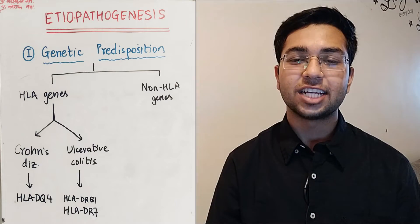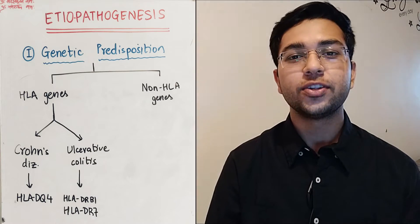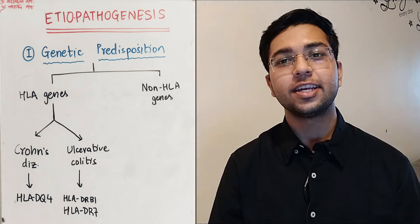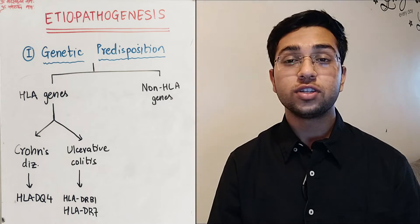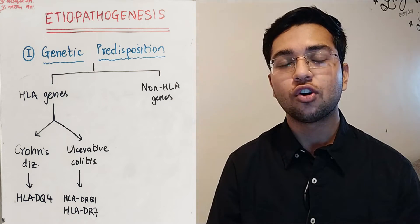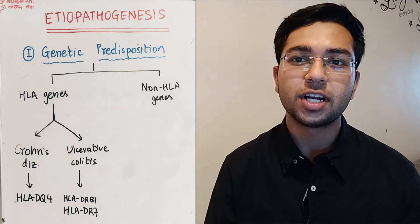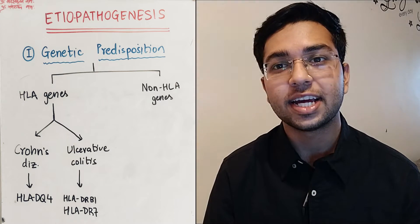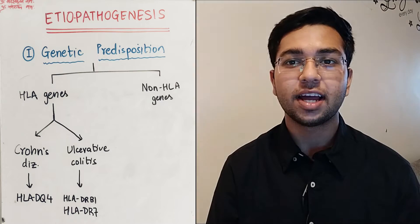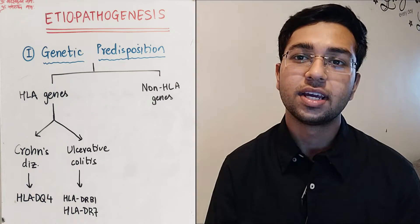Let's start with the etiopathogenesis. First is genetic predisposition, which is divided into two things: first is HLA gene, second is non-HLA gene. HLA stands for human leukocyte antigen. Due to genetic recombination, each one of us has a different set of HLA genes. Those individuals with HLA-DQ4 are more susceptible to Crohn's disease, while those with HLA-DRB1 and HLA-DR7 are more susceptible to ulcerative colitis.